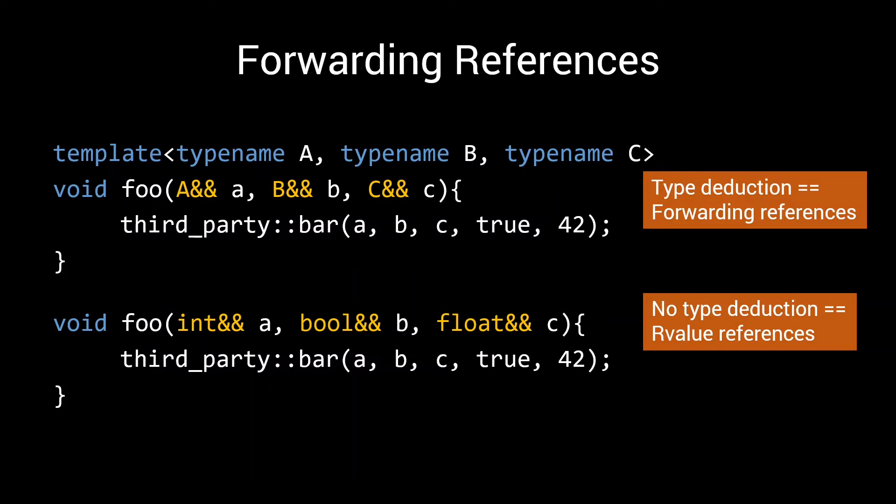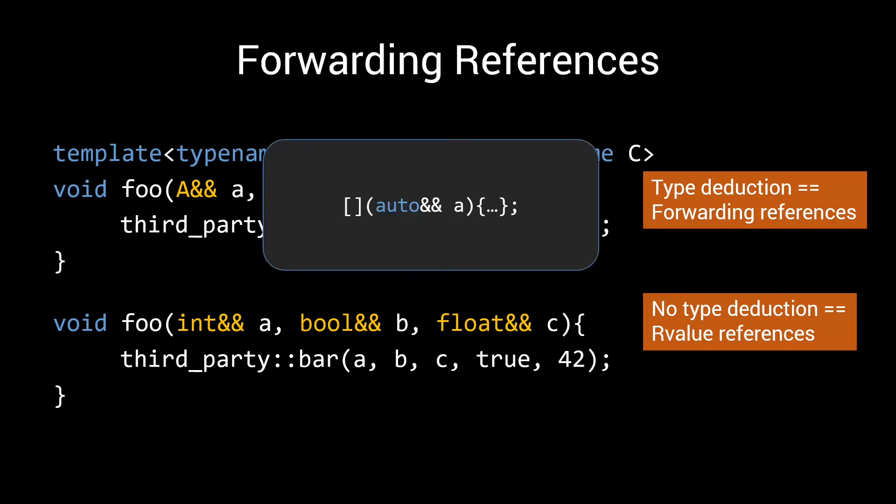And remember, that aside from templates, you also have type deduction when using the auto keyword. So you can, for example, create a forwarding reference when you're defining your lambda with auto ampersand ampersand.